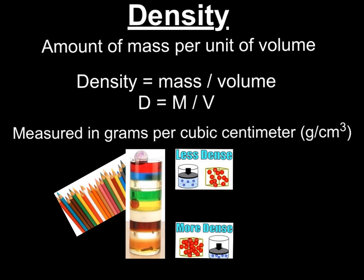Now density is our last measurable property of matter, and it's probably the hardest one to grasp. Density is the amount of mass per one unit of volume. Density's formula is density equals mass divided by volume. If I use variables, it's D = M ÷ V. We measure this in grams per cubic centimeters, labeled with grams per cubic centimeters. What we know is density tells us if something's going to sink or float. If something is less dense, it's going to float, and if it's more dense, it's going to sink.